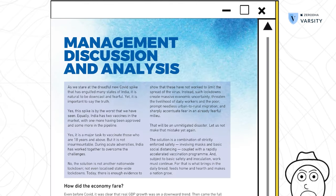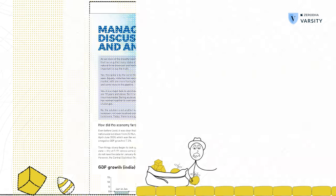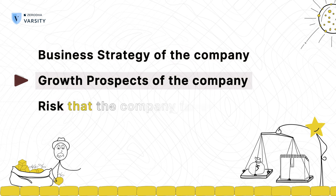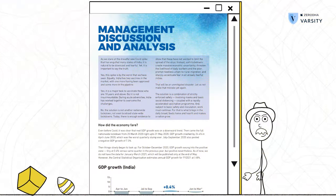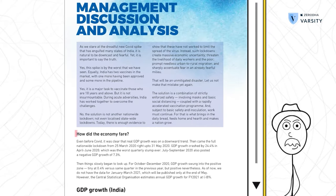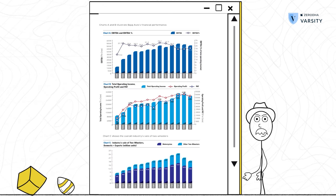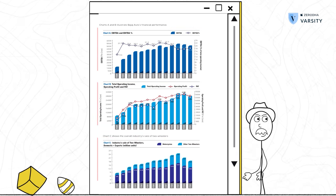The Management Discussion and Analysis section in the annual report is one of the most important sections. This is where you get insights into the business strategy of the company, the growth prospects, and the risks the company faces. Usually this section starts with a note on how the economy has fared, followed by how the sector has performed. Bajaj Auto has also included financial highlights in the MD&A, which you can ignore for now.